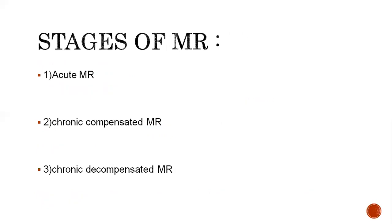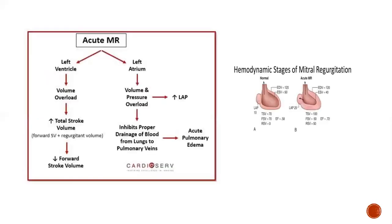Stages of MR include acute MR, chronic compensated MR without symptoms, and chronic decompensated MR. In acute MR, there is sudden dysfunction leading to volume overload of the left ventricle, an increase in total stroke volume — which is a combination of forward stroke volume and regurgitant volume — leading to pulmonary venous hypertension and potentially acute pulmonary edema.